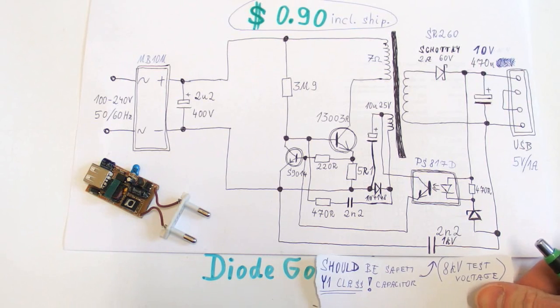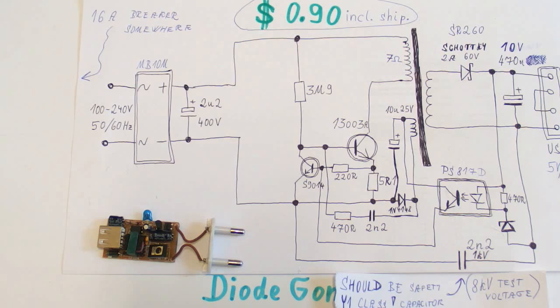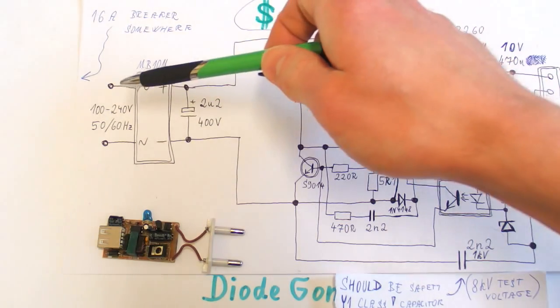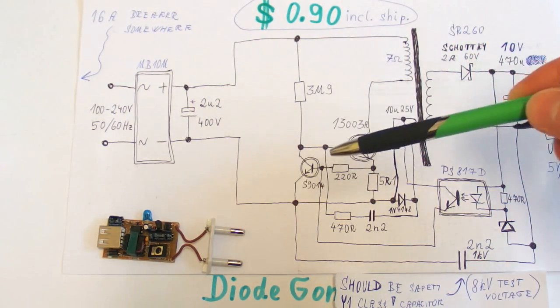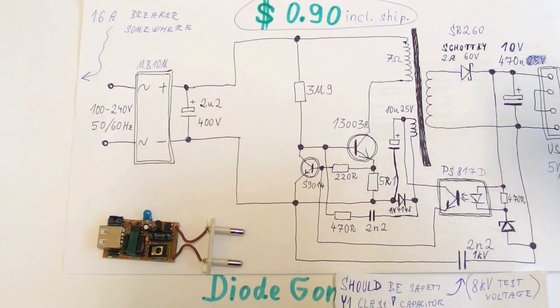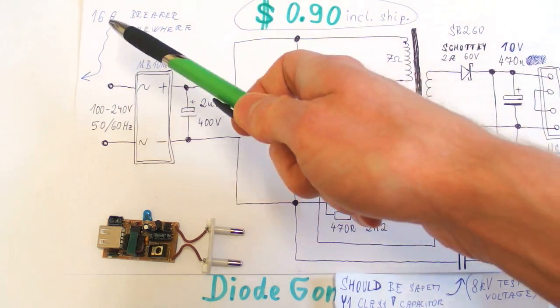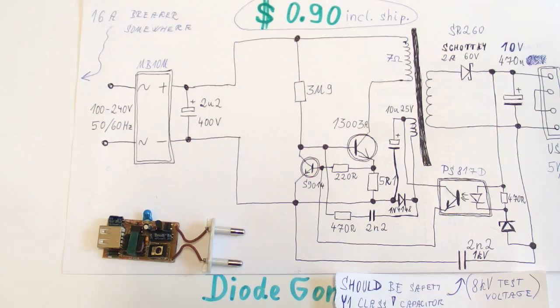This capacitor should be class Y1 capacitor with a test voltage of eight kilovolts, not just any cheap ordinary one kilovolt capacitor. And it goes on. There is no fuse at the input, so what happens if something goes short in the circuitry? It will just burst into flames because the only thing to limit the current is a 16-amp breaker somewhere in the installation, which reacts quite slowly. From the point of fire safety, it's also absolutely horrific.